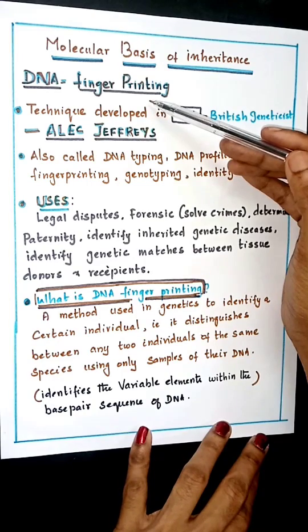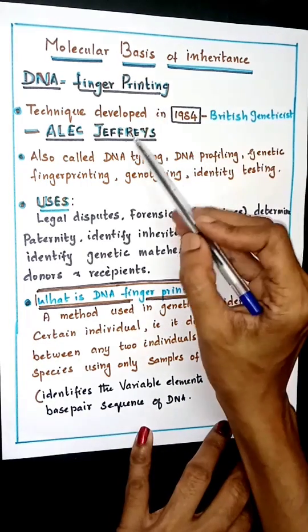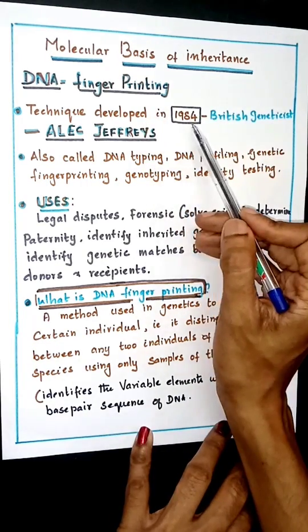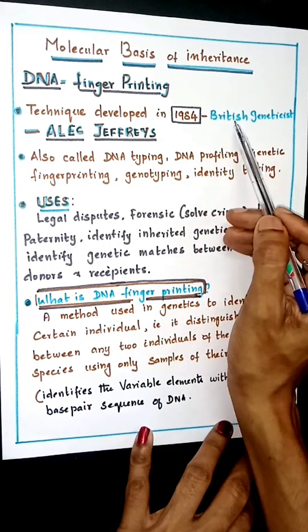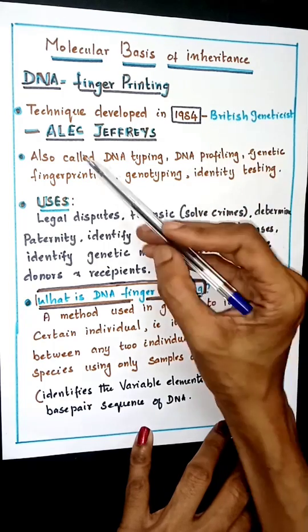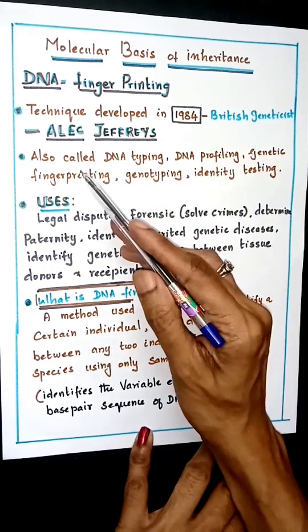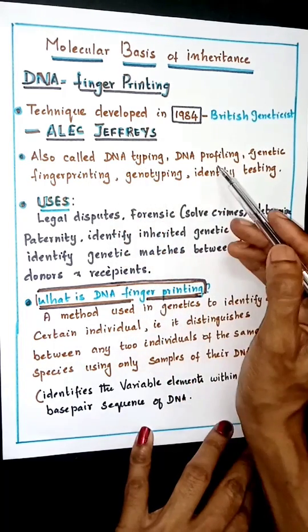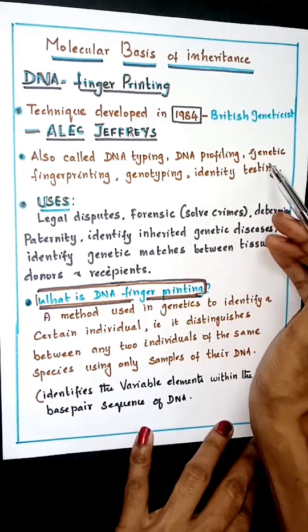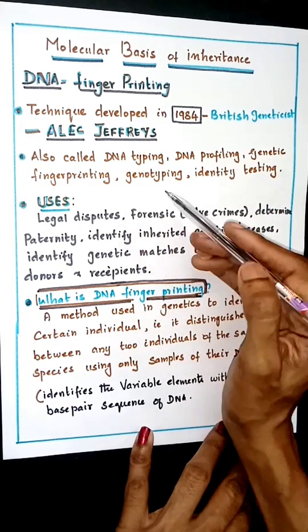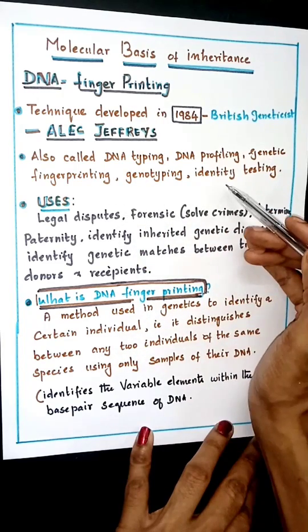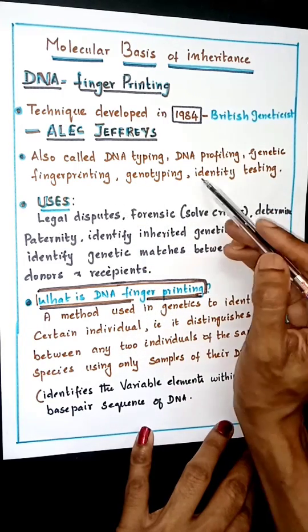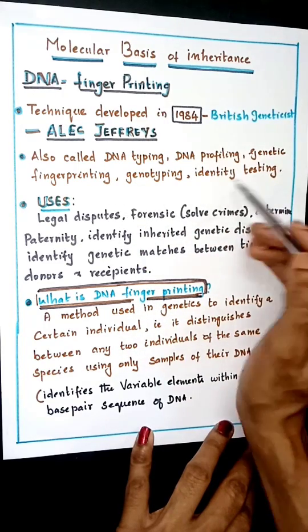DNA fingerprinting is a technique developed in 1984 by the British geneticist Alec Jeffreys. It is also called DNA typing, DNA profiling, genetic fingerprinting, genotyping, and identity testing — used to identify a particular individual.